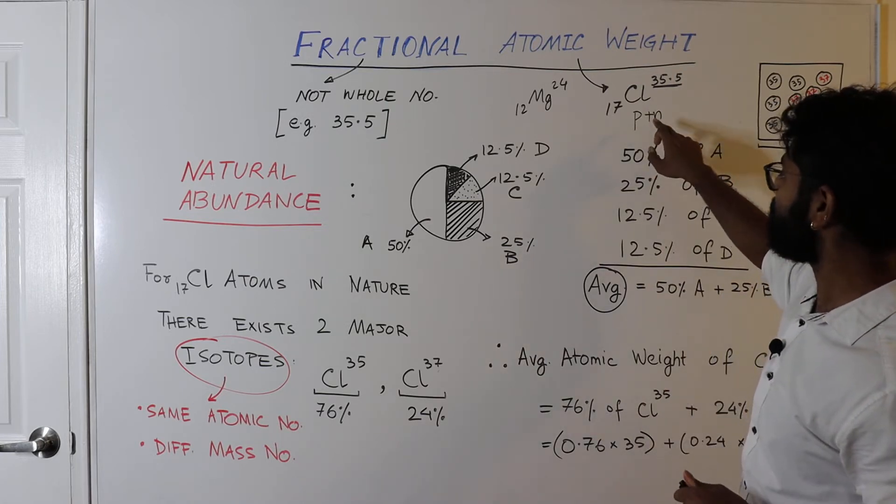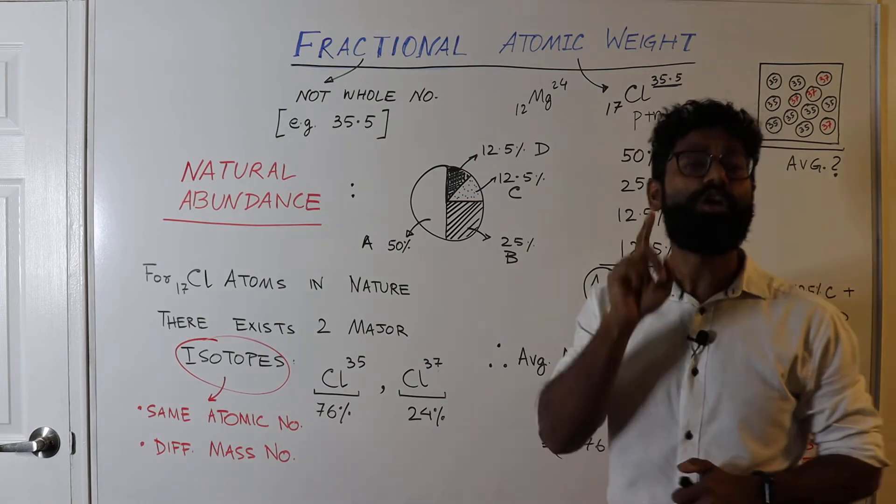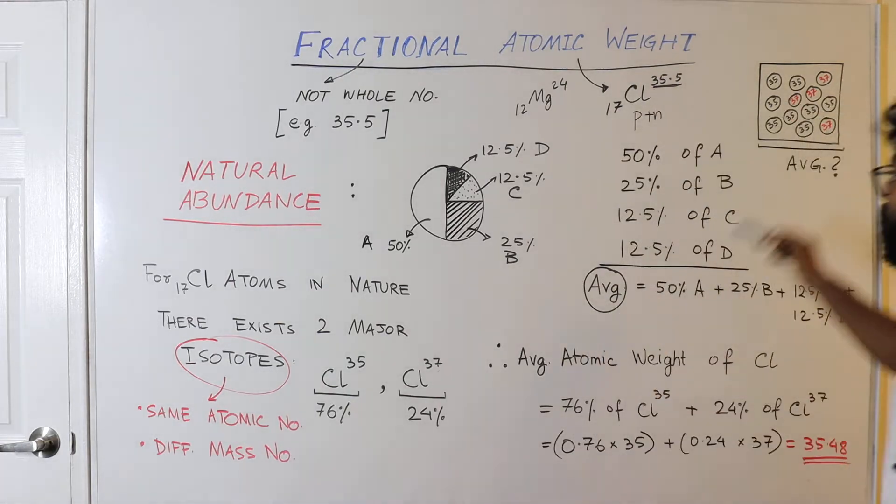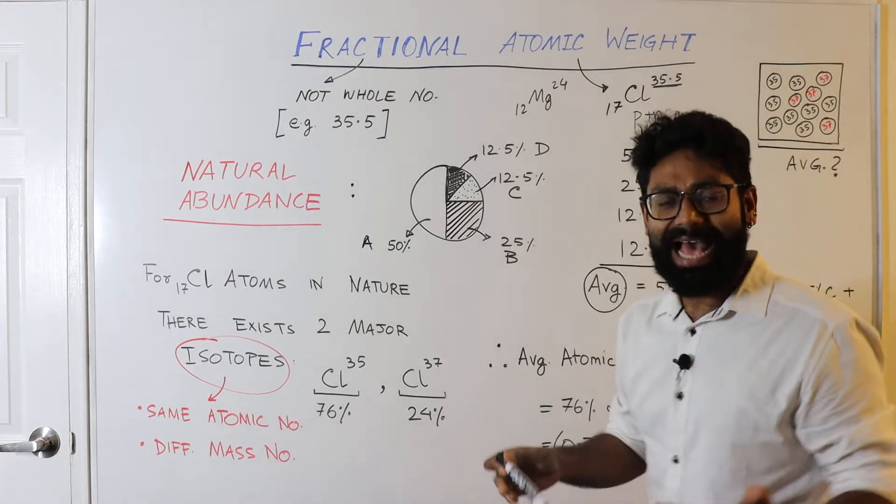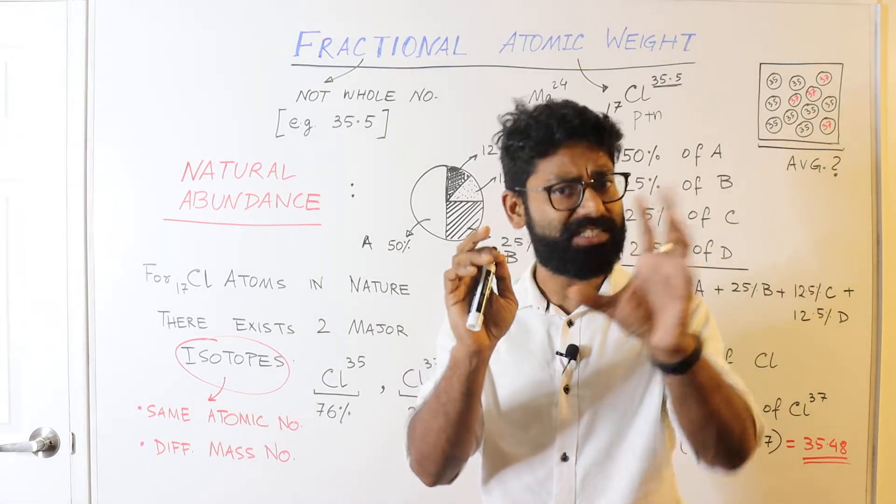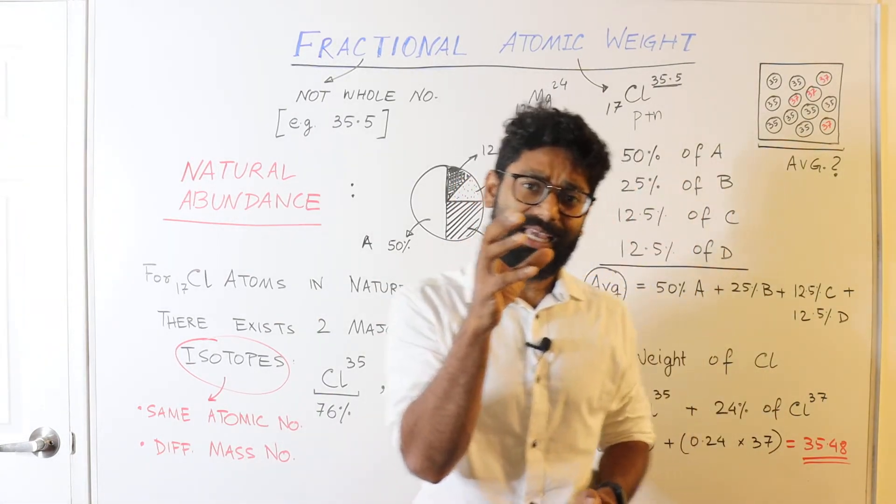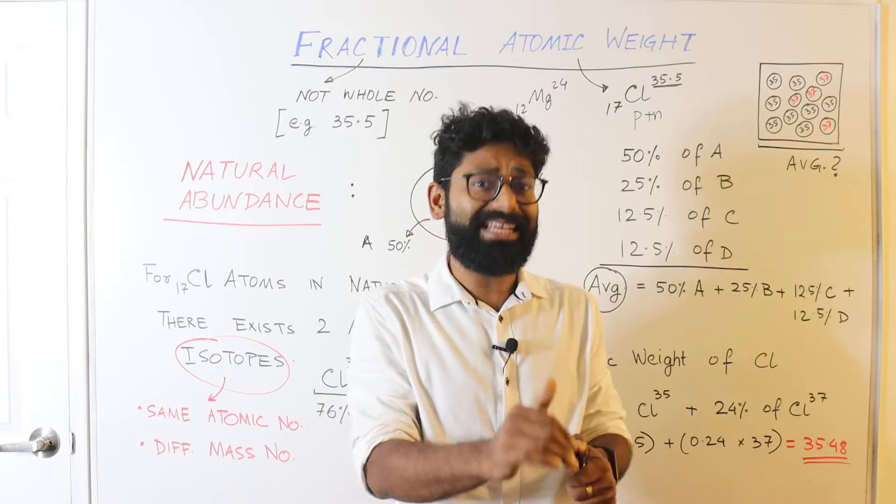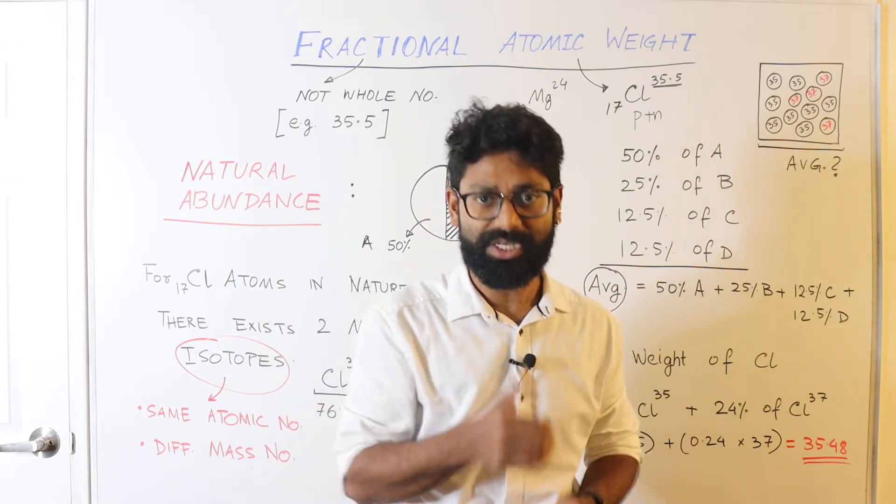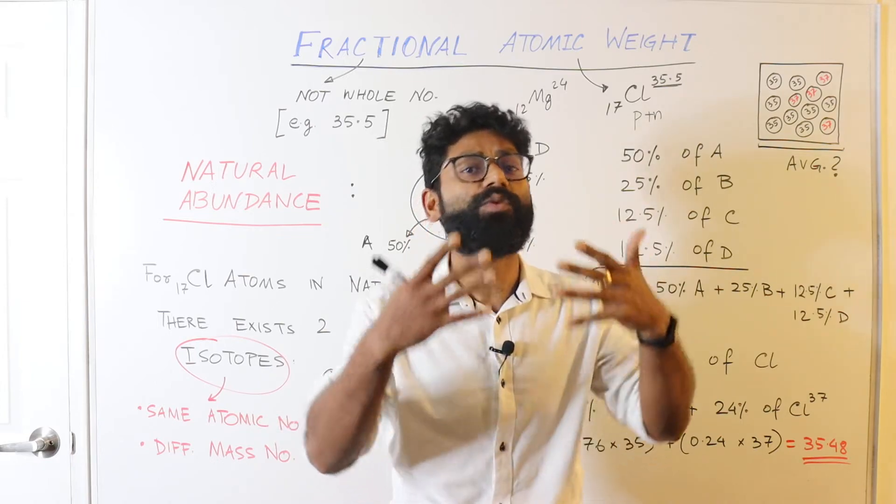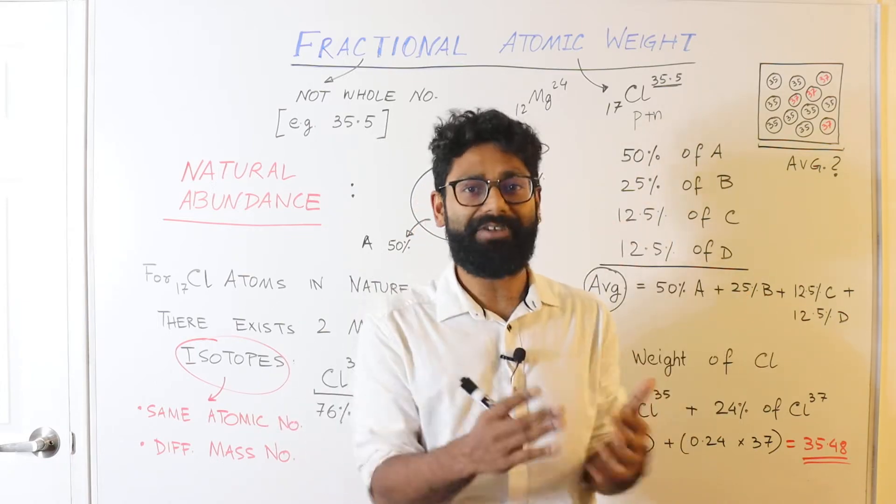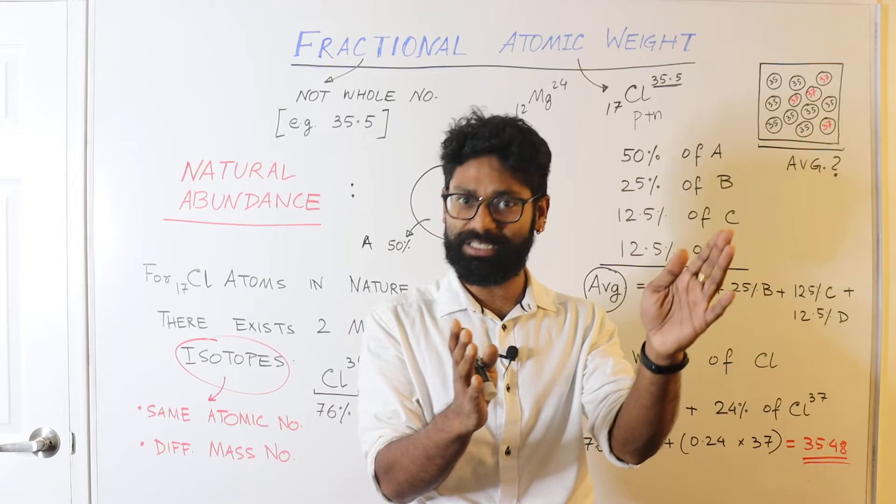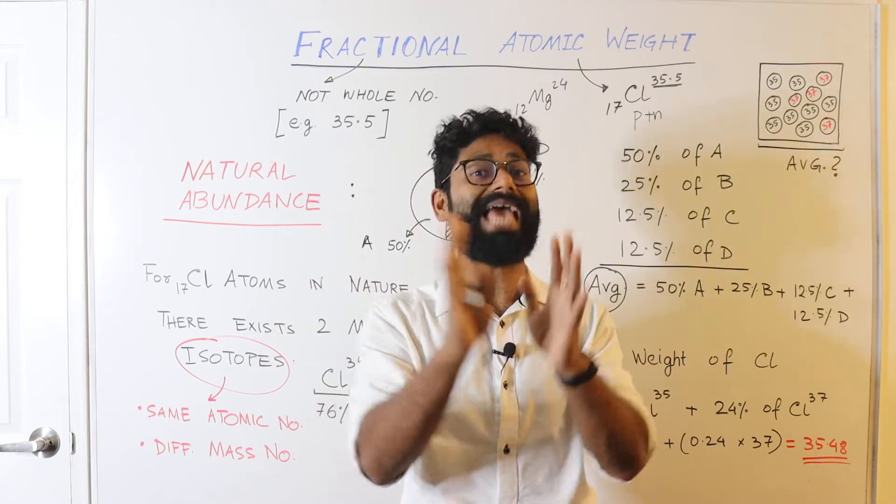How can the number of protons plus neutrons in chlorine be 35.5? To understand this, let's try and understand the average. Now let's assume you have a box and that box has 100 spheres. The weight of 50 of those spheres is say 10 grams each and the rest 50 are 20 grams each. Now if I tell you to find out the average weight of the spheres, what is the average weight? What comes to you intuitively, the average of 10 and 20, when you have 50% of 10 and 50% of 20, what is the average? 15.